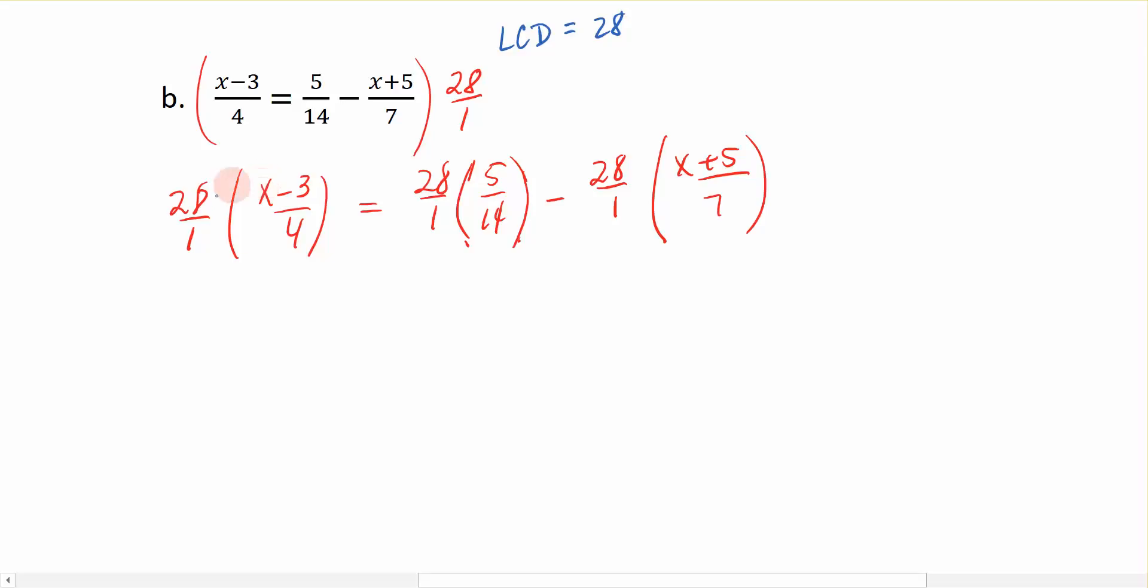Now, when I'm multiplying fractions with this pair right here, we can cancel common factors. In other words, 4 divides into 28 seven times, and notice that that leaves a 1 down here in the denominator. So my denominator disappears, and this simply is going to be 7 times x minus 3. No more fraction for that term. That's equal to 14 divides into 28 two times, so I have 2 times 5, which is 10.